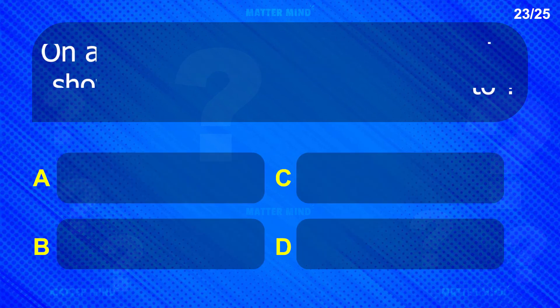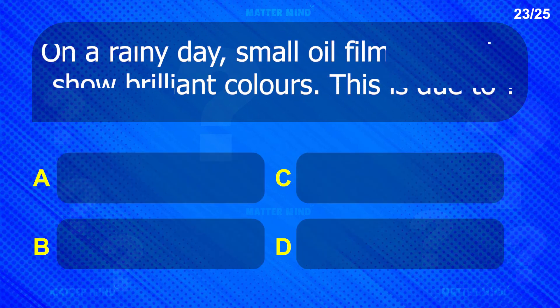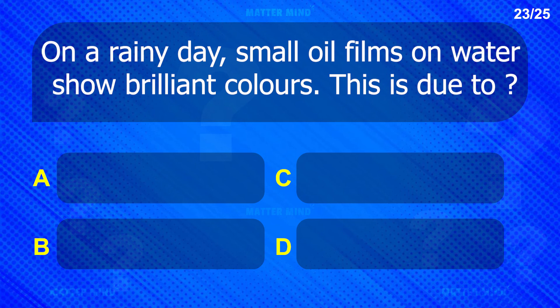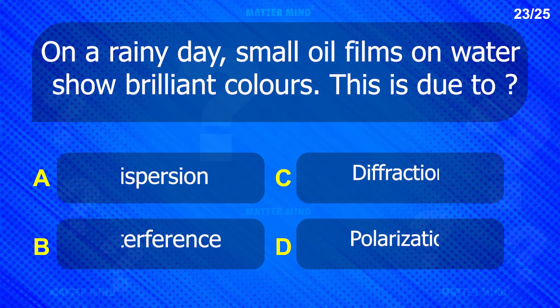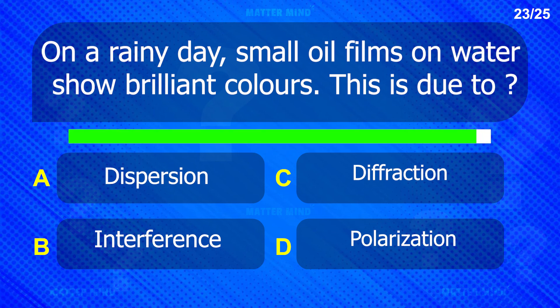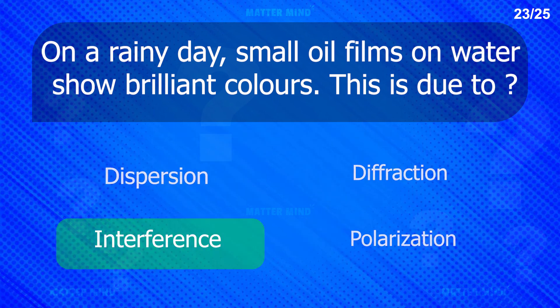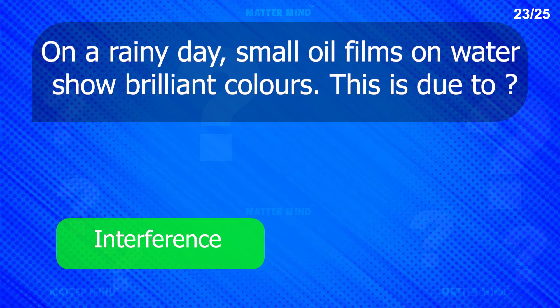On a rainy day, small oil films on water show brilliant colors. This is due to interference.